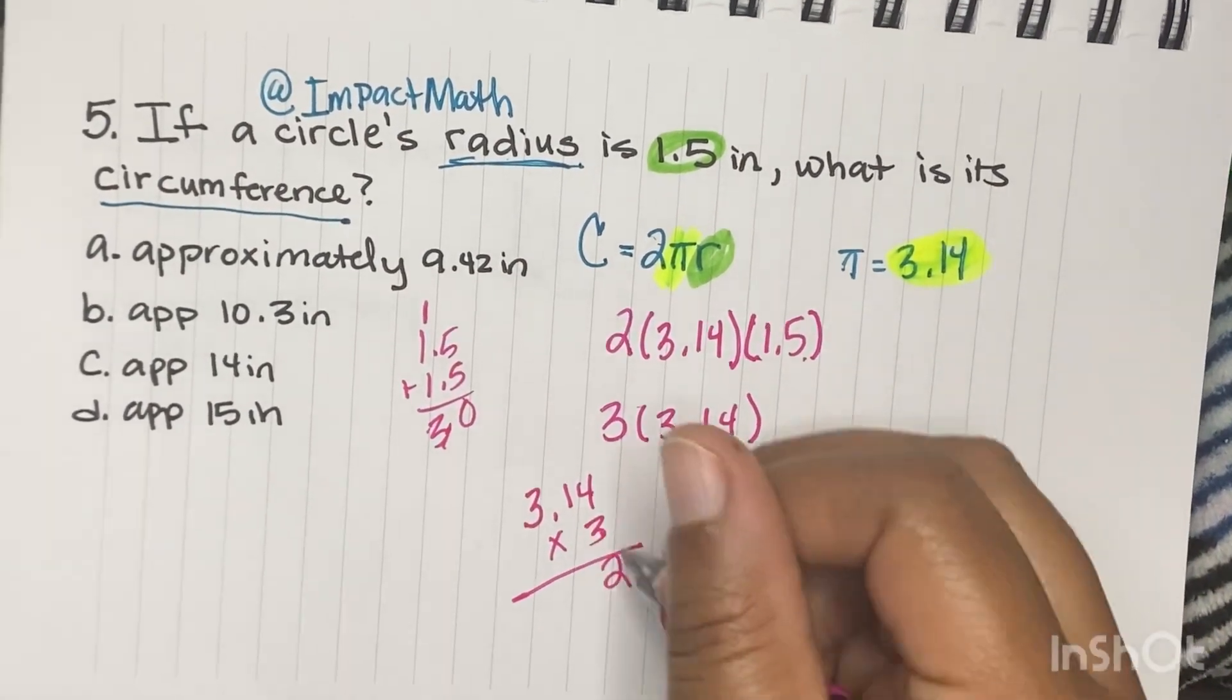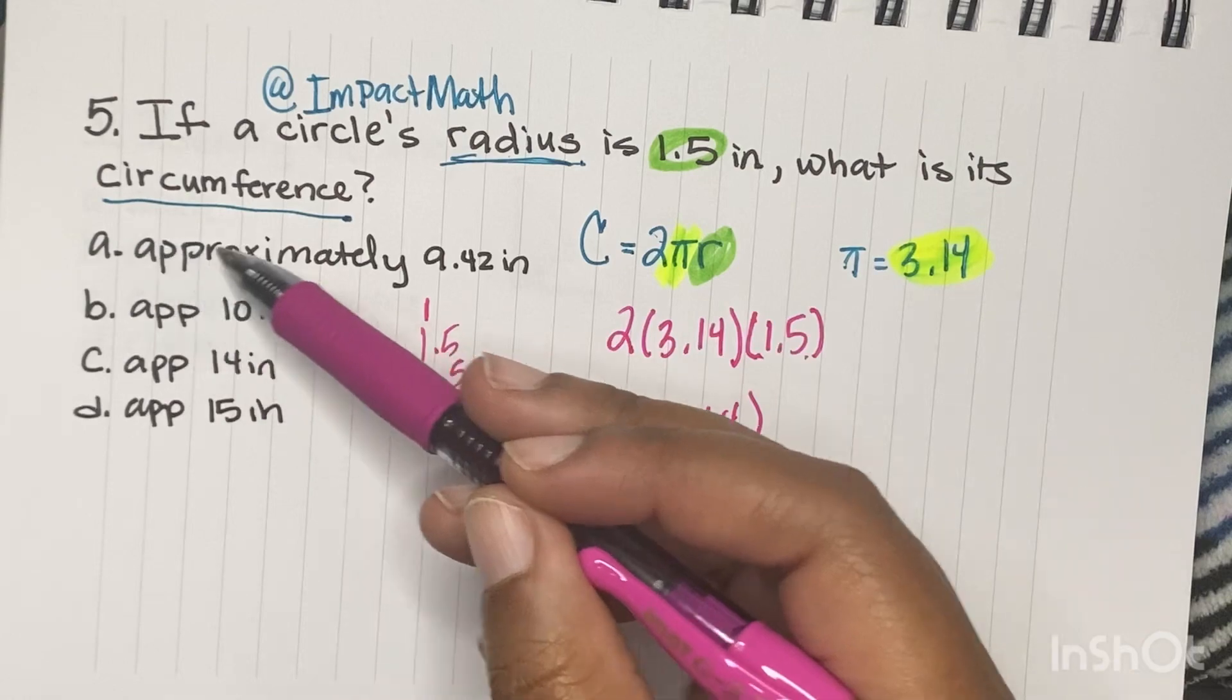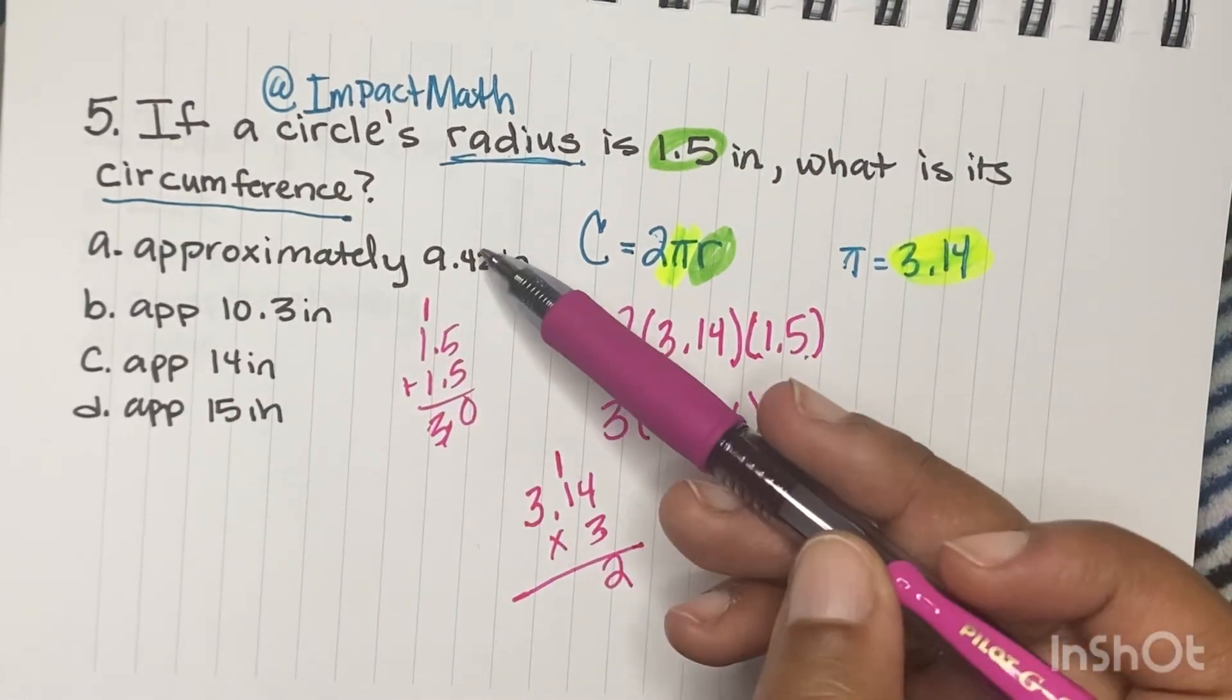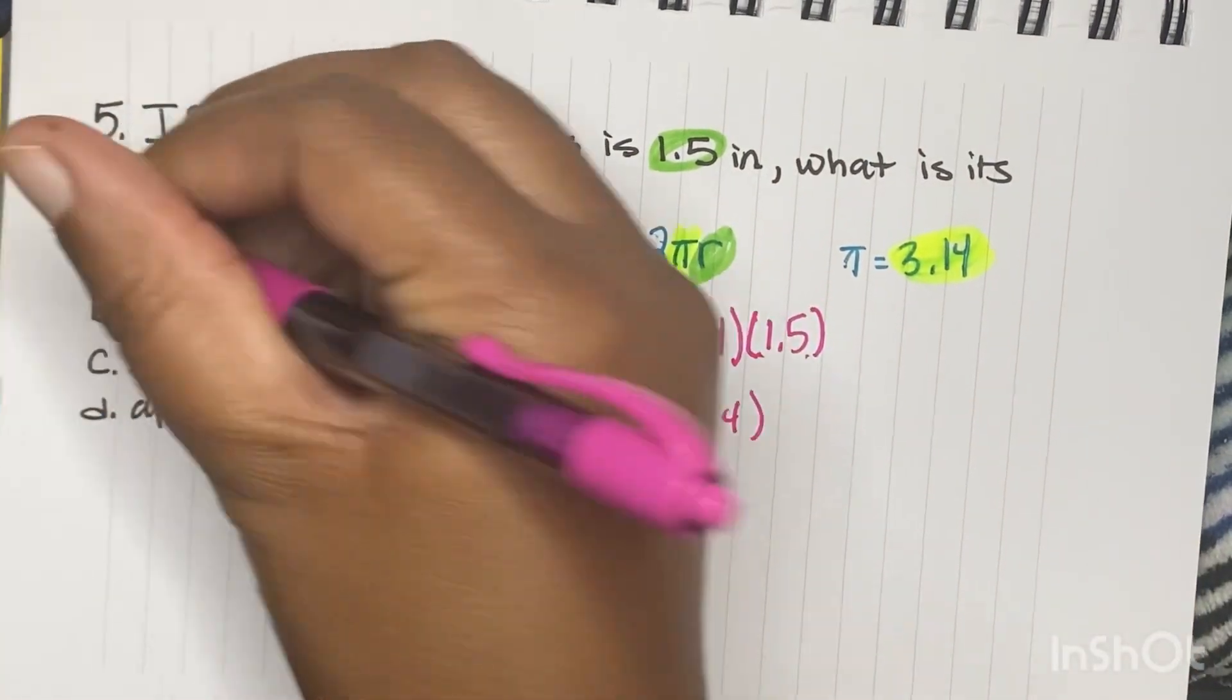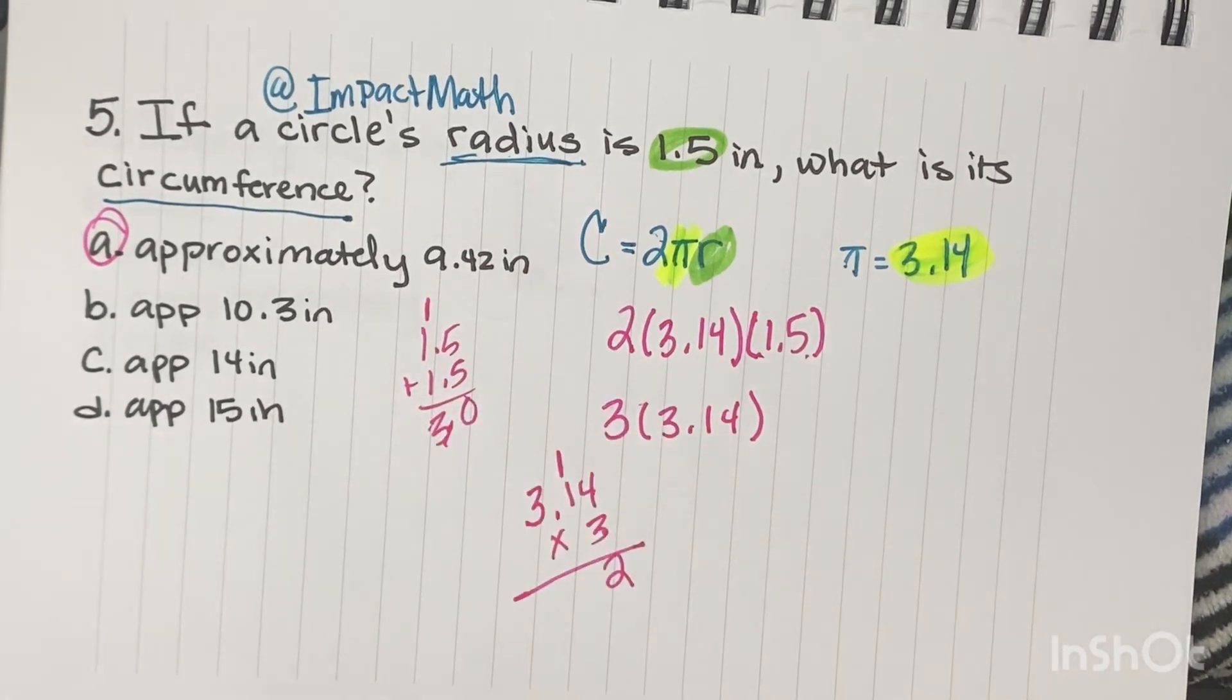And then so now we're going to do 3.14 times 3. Well, 3 times 4 is 12, carry the 1. And I'm going to look for my answer that ends in a 2. So A is the only number that ends in a 2. So I would go with A. I would save my time for my test and go to the next question.